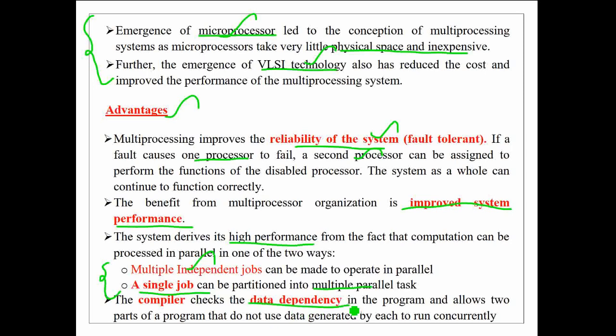If no data dependency is found, then only they can be allowed to run concurrently. This data dependency checking is usually done by the compilers.